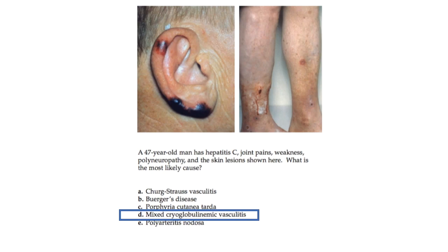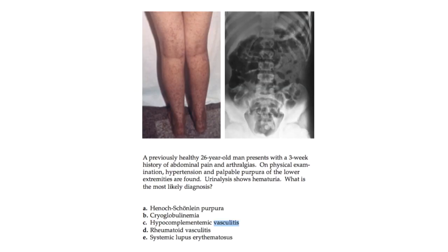Mixed cryoglobulinemia may be present in more than 50% of hepatitis C–infected patients; however, cryoglobulinemic vasculitis develops in only a minority. Sample collection is critical: venous blood must be kept at 37°C for two hours before serum is removed, then placed at 4°C for up to four days to allow cryoproteins to precipitate.